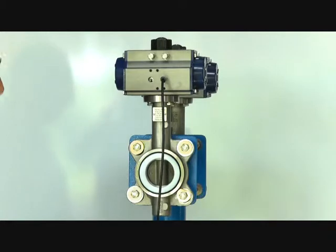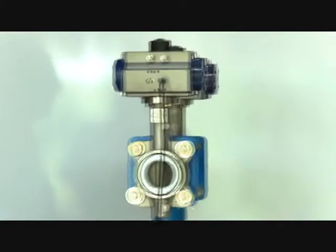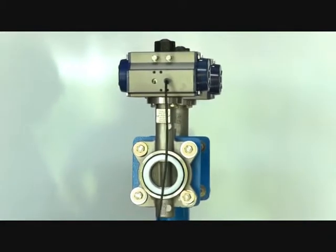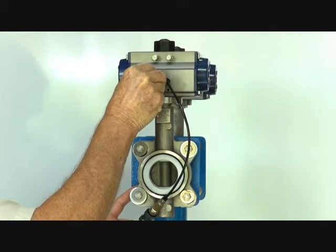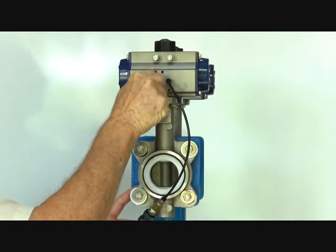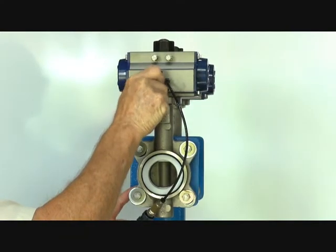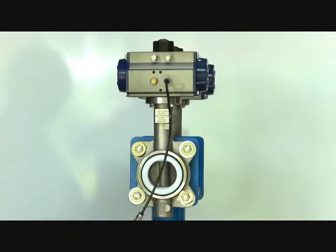Now we recommend even if you're going to use a 3-2 air signal to always put a little silencer in the exhaust port here. It's to stop dust and dirt being sucked back in.